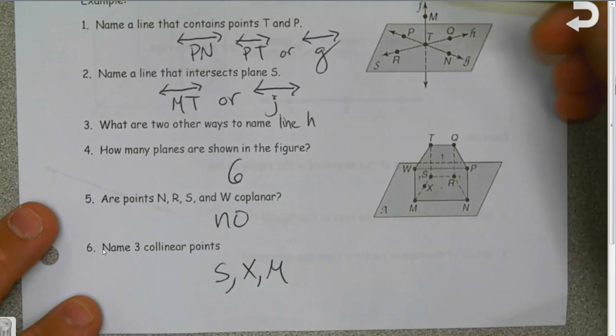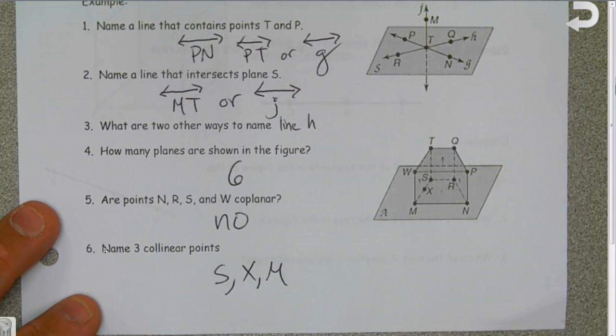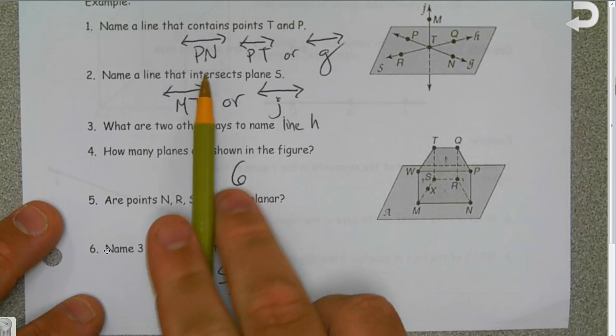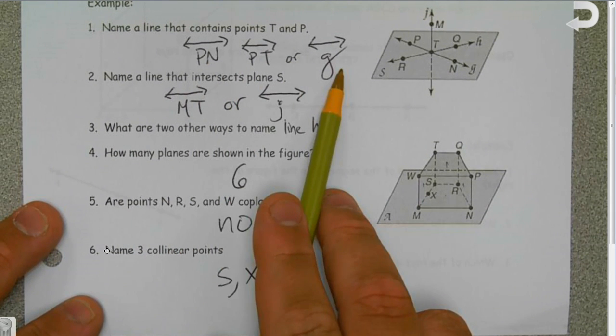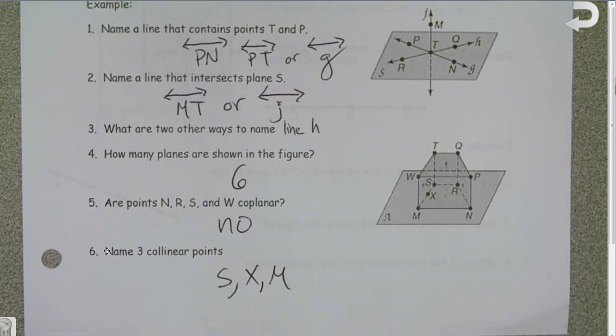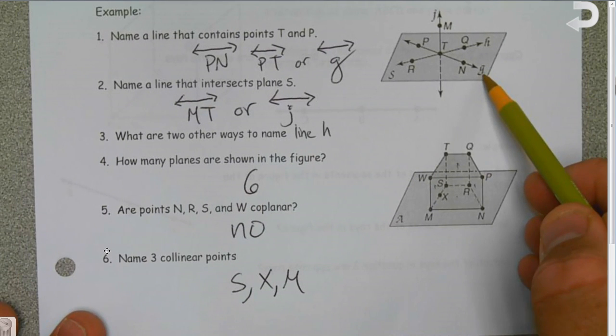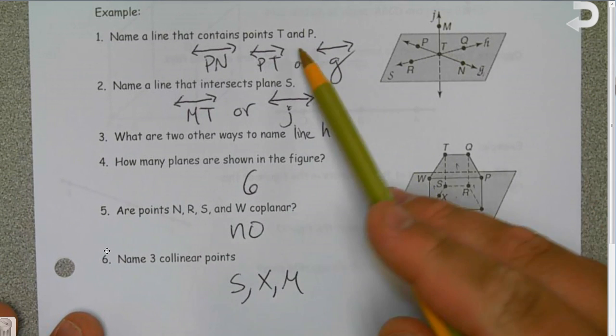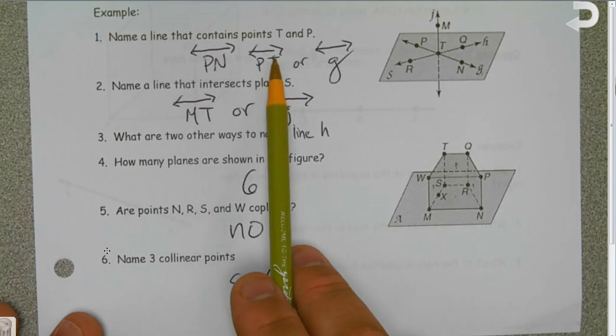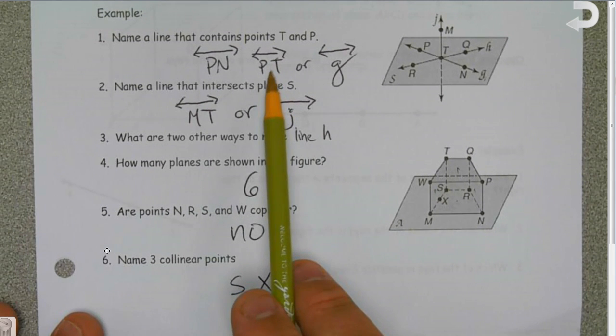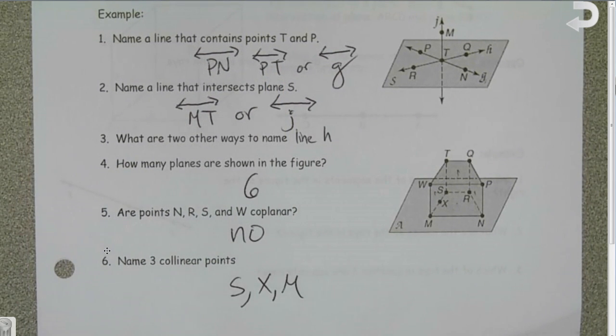Hopefully you took a couple minutes to answer these questions. We're going to talk about these answers real quick. For number one, it says name a line that contains points T and P. You can see I have line PN, line PT, or line g. It's important to note that a line can be named with two letters or with one italicized letter. There are lots of possible answers for number two about naming a line that intersects plane S.